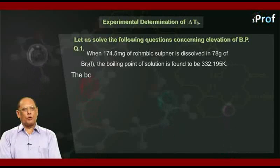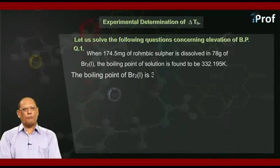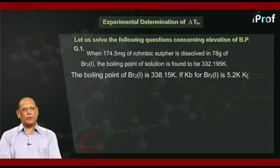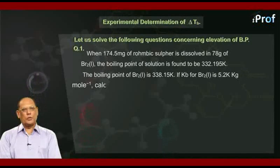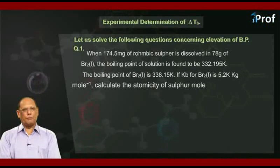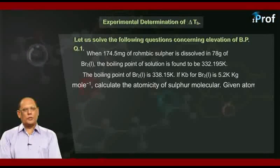The boiling point of bromine liquid is 332.15 Kelvin. If Kb for bromine liquid is 5.2 Kelvin kilogram mole inverse, calculate the atomicity of sulfur molecule.